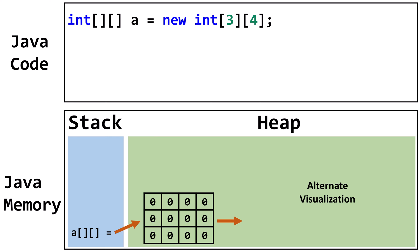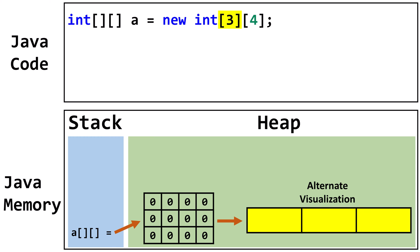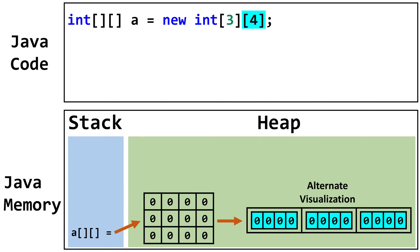Let's take a look at alternative visualizations that'll help us better understand how Java stores a 2D array in memory. The first number, in this case 3, creates a one-dimensional array of size 3. The second number, in this case 4, creates a one-dimensional array of size 4 inside each of the indexes of the first array. A two-dimensional array can be described as an array of arrays.